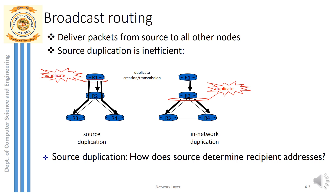First of all, what is broadcasting? Broadcasting is sending packets to all. In networks, broadcasting means delivering packets from a source to all the other nodes in the network. So how can broadcasting be done, or how can broadcast routing be achieved?